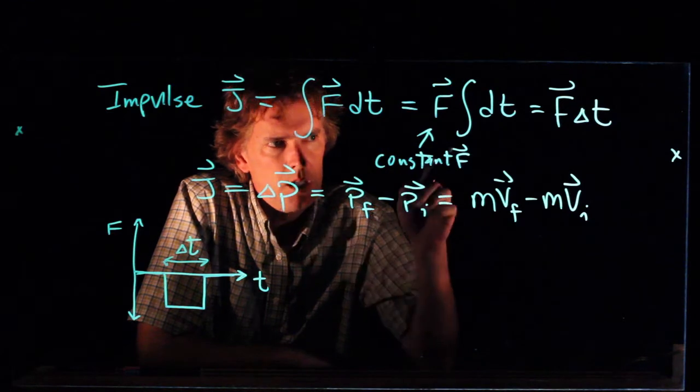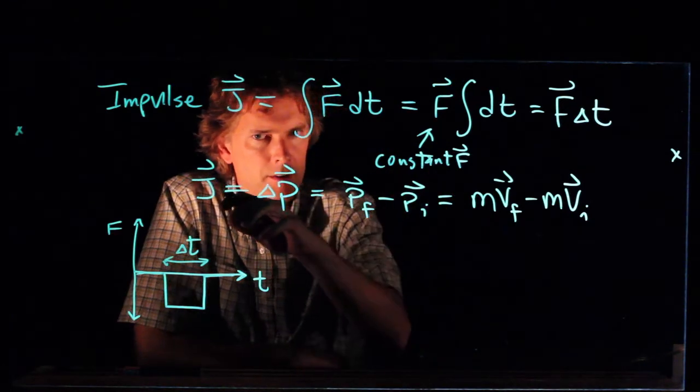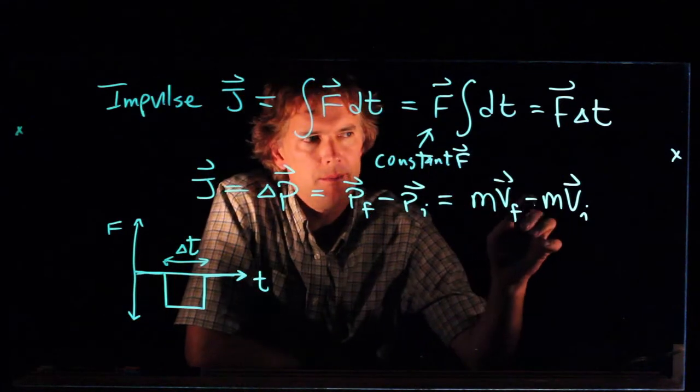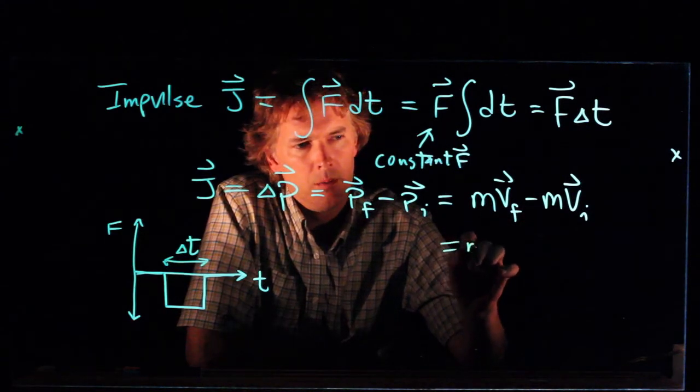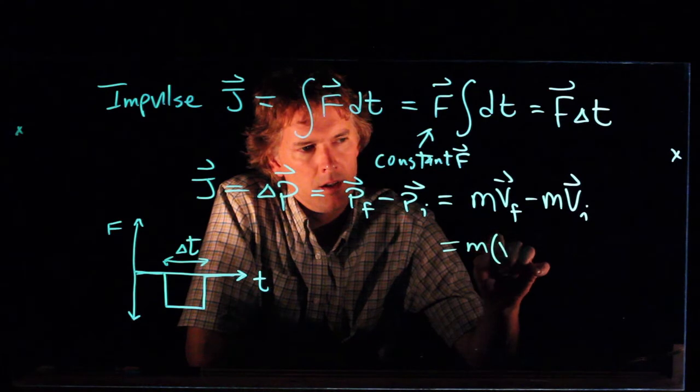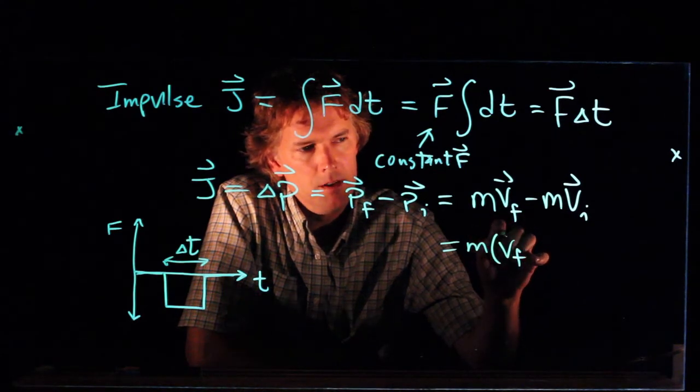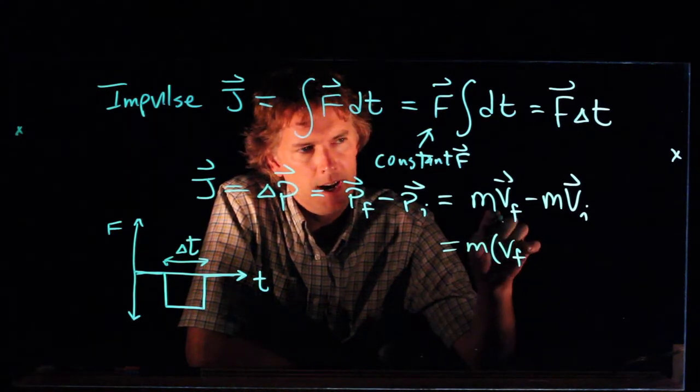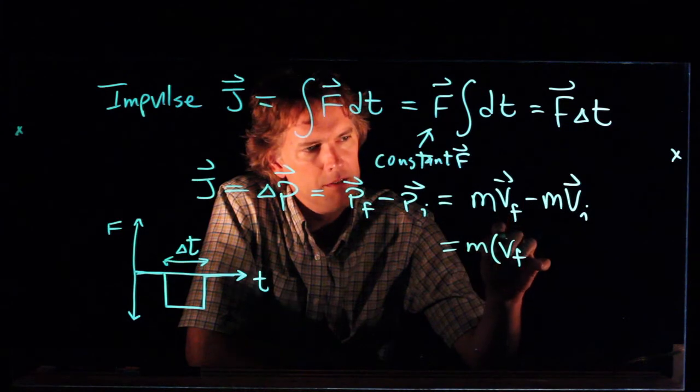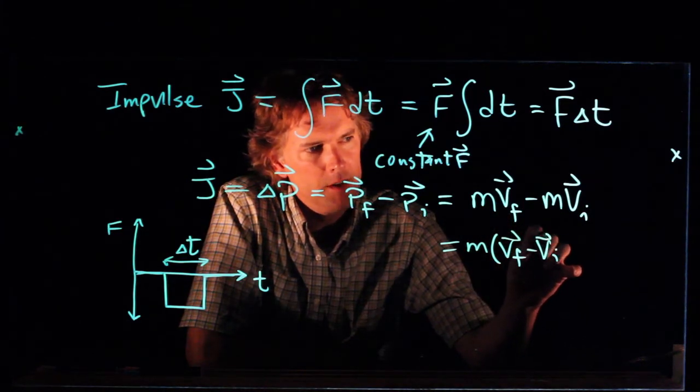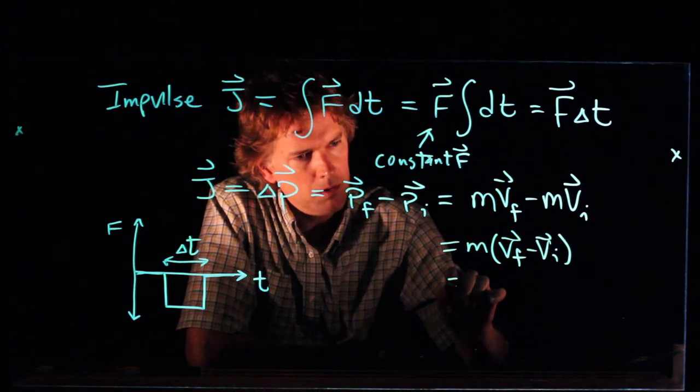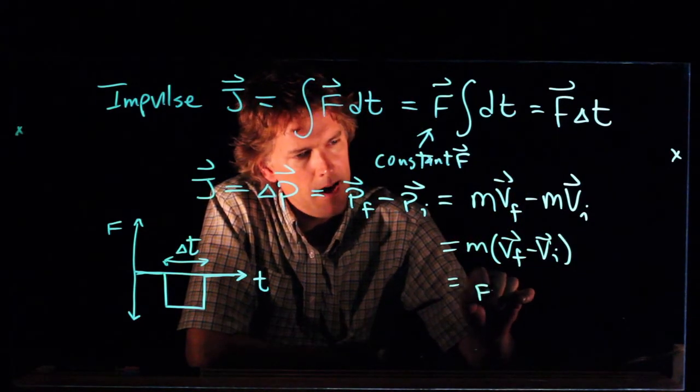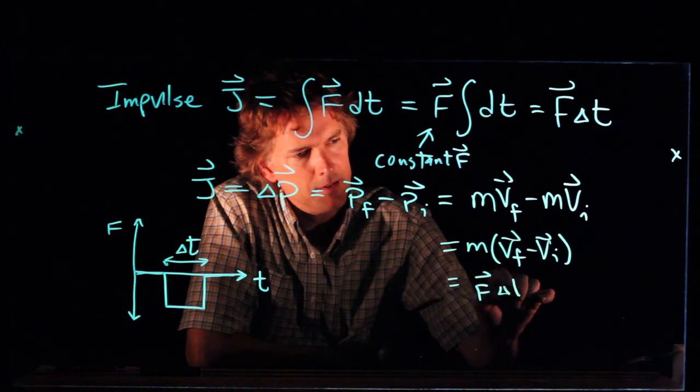Well, yeah, if we look at this last equation here, we have impulse is equal to mv final minus mv initial, which if m is constant, we can pull that out in front, factor it out. We already said it was constant, so we get mv final minus mv initial, but all of that is equal to f delta t.